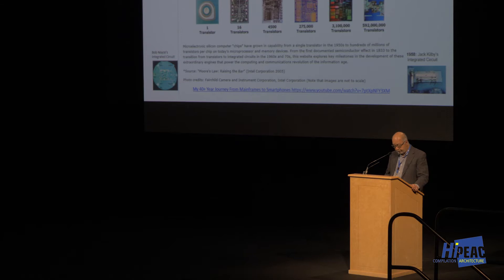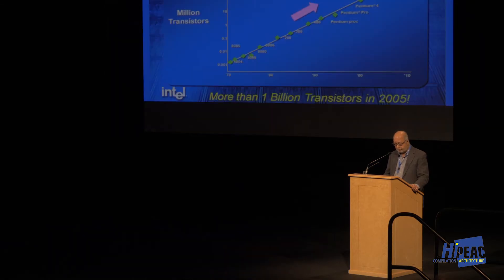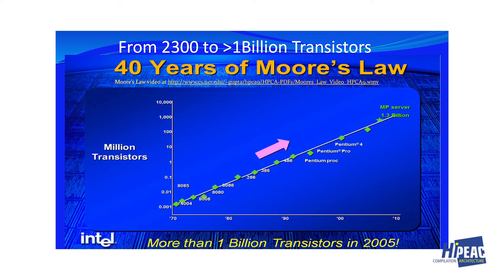If you're interested in a longer story about the history of microprocessors, you can follow the link for a talk I gave at the Computer History Museum. Here's the chart of how we got from 2,300 transistors in 1971 with the 4004 — the first microprocessor — to over a billion transistors in 2005.